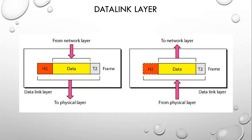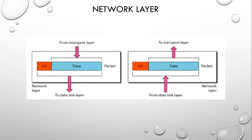The data link layer provides media access and physical addressing, and divides the stream of bits into frames. Examples include HTTP and SSL/TLS. The network layer provides path determination using logical addressing and is responsible for the delivery of individual packets. Examples include IPv4, IPv6, and others.